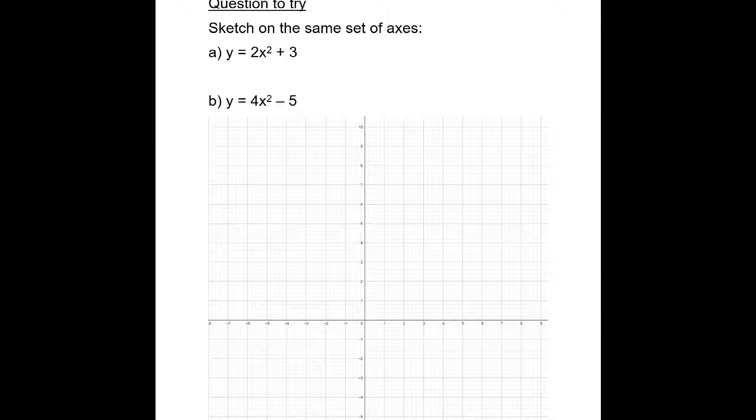Here is a quick question for you to try. I'd like you to try and sketch these graphs on the same set of axes. Remember, the really important thing is not so much what is in front of the x squared unless it's positive or negative. In both of these cases, it's positive. It's the number on the end because that will determine the coordinates of the turning point. Please have a go at this question now and when you're ready for the answer, press play.